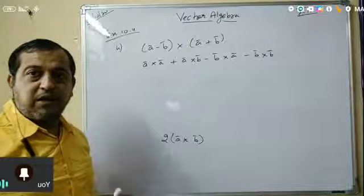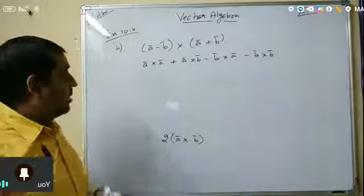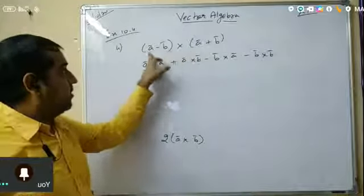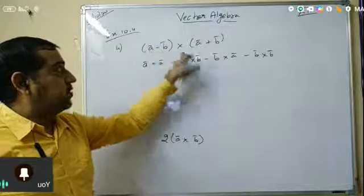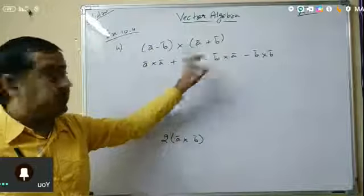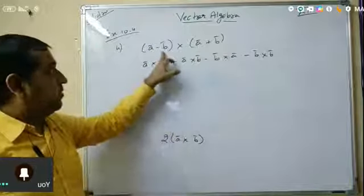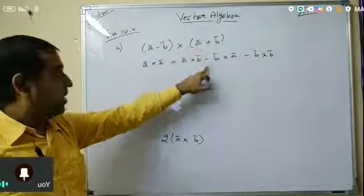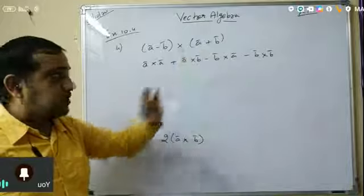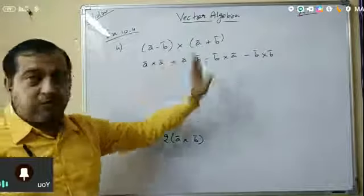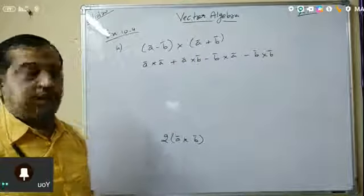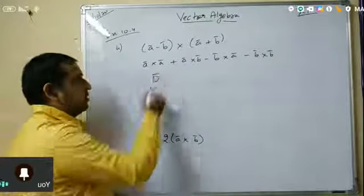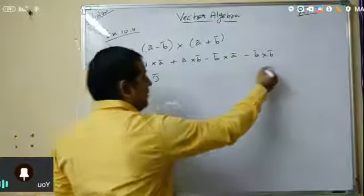Opening the brackets: a cross a, plus a cross b. Then b is negative and a is positive, so minus b cross a. And b negative times b positive gives minus b cross b. Now a cross a is the zero vector, and b cross b is also the zero vector.